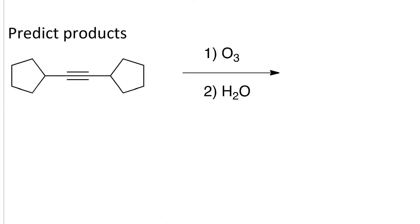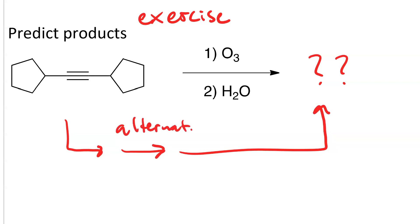Here's an exercise for you to try. If I have this dicyclopentyl alkyne and I do ozonolysis of it, what product or products will I get? Also, is there a better alternative method? Pause your video now and work it out yourself.